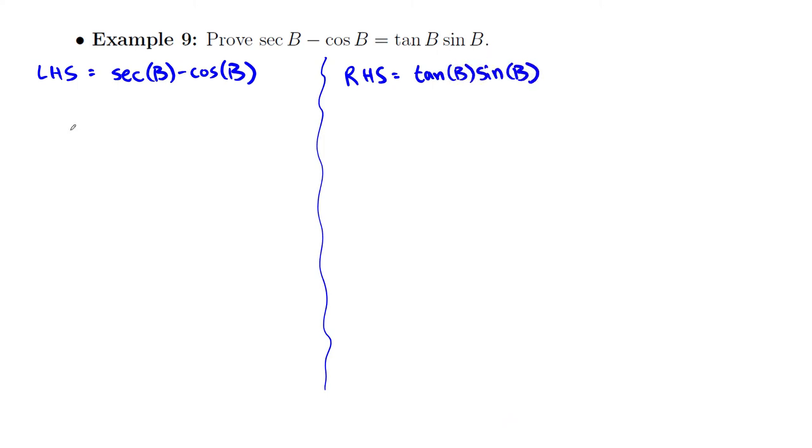And so basically, we're just going to do stuff separately to these to make them simpler. So like, how about this? 1 over cos(B), right? Let's write everything in terms of sines and cosines.